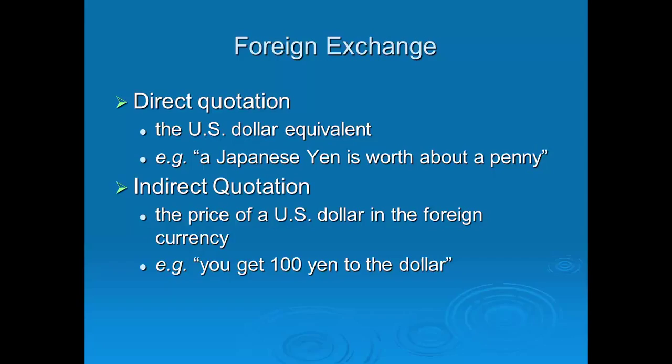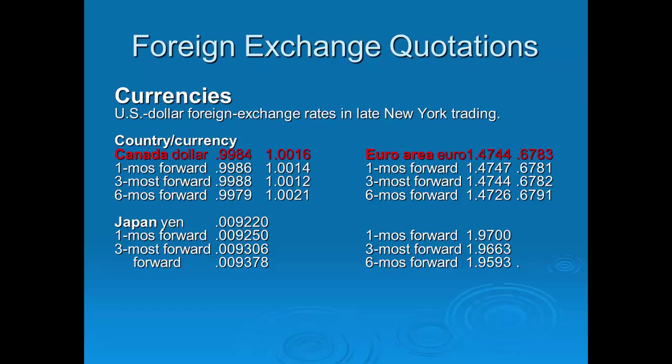Looking at foreign exchange quotations for the euro: the spot rate is 1.4744, meaning for one euro you pay 1.4744 US dollars. The indirect quote is 0.6783, meaning for one US dollar you get 0.6783 euros. One divided by 1.4744 should give you 0.6783.